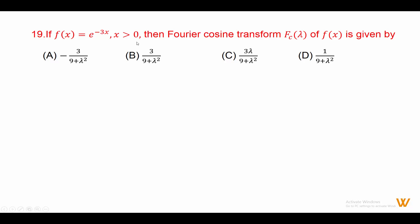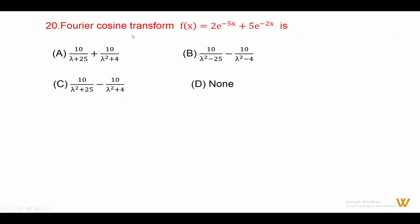Nineteen: if fx equals e raised to minus 3x for x positive, then the Fourier cosine transform Fc(lambda) of fx is given by the formula Fc of e raised to minus ax equals a upon lambda squared plus a squared. Here a equals 3, so the answer is 3 upon lambda squared plus 9. Answer is option B.